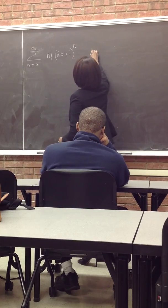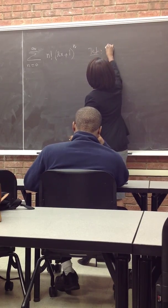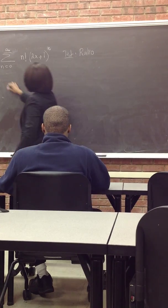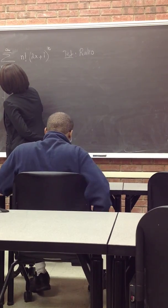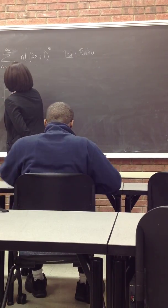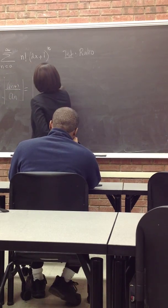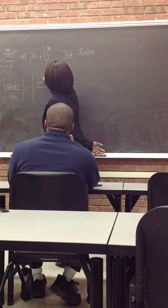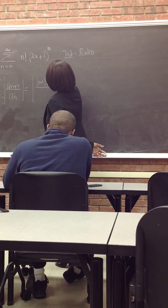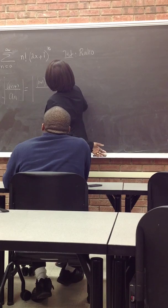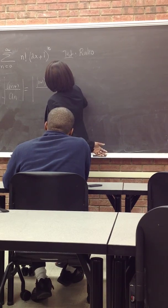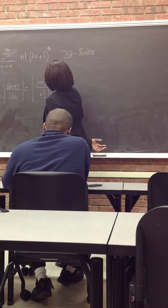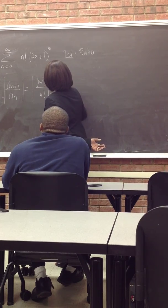Okay, so what is A sub n+1 over A sub n? A sub n+1 would be (n+1) factorial times (2x+1) to the power n+1, and divide by n factorial (2x+1) to the power n.